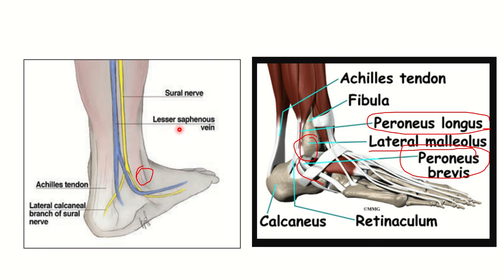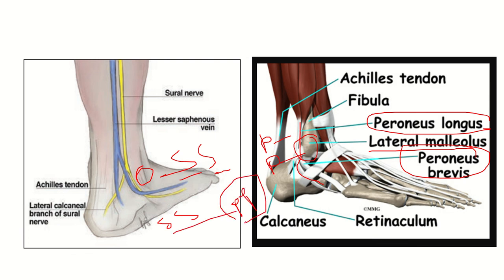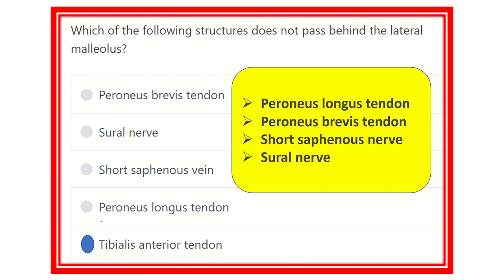These structures can be remembered using the shortcut 'double S, double P': one S for sural nerve, another S for short saphenous vein, one P for peroneus longus, and another P for peroneus brevis. This is the shortcut to remember the muscles, nerve, and other structures which pass behind the lateral malleolus.